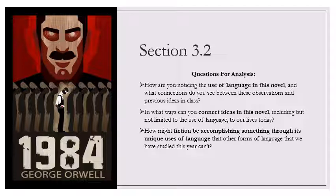He paused for a few moments as though to allow what he had been saying to sink in. Winston. Do you remember, he went on, writing in your diary, freedom is the freedom to say that two plus two make four? Yes, said Winston. O'Brien held up his hand, its back toward Winston with the thumb hidden and the four fingers extended. How many fingers am I holding up, Winston? Four. And if the party says that it is not four but five, then how many? Four.